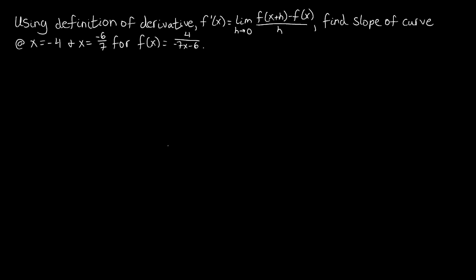In this video, we're going to look at another example of using the definition of the derivative, which is given right here, to find the slope of a curve for f of x equals this rational function for these two given x values.